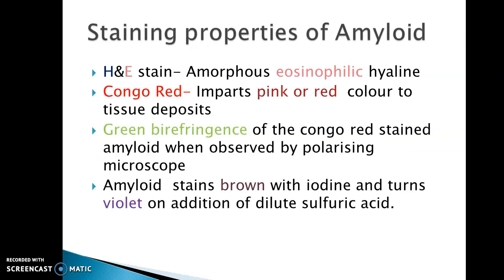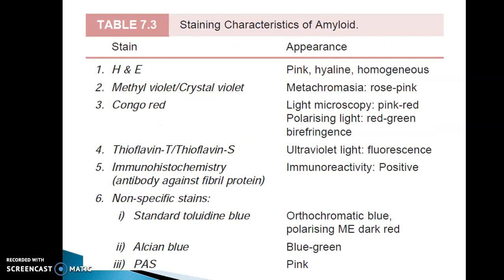Staining properties of Amyloid are frequently asked in exams. On H&E stain, it is amorphous, eosinophilic, and hyaline. On Congo red, it imparts a pink or red color to the tissue deposits. Congo red stain is the diagnostic stain for Amyloid, and it gives apple green birefringence when the Congo red stained tissue is observed under a polarizing microscope. Amyloid also stains brown with iodine and turns violet on addition of dilute sulphuric acid.